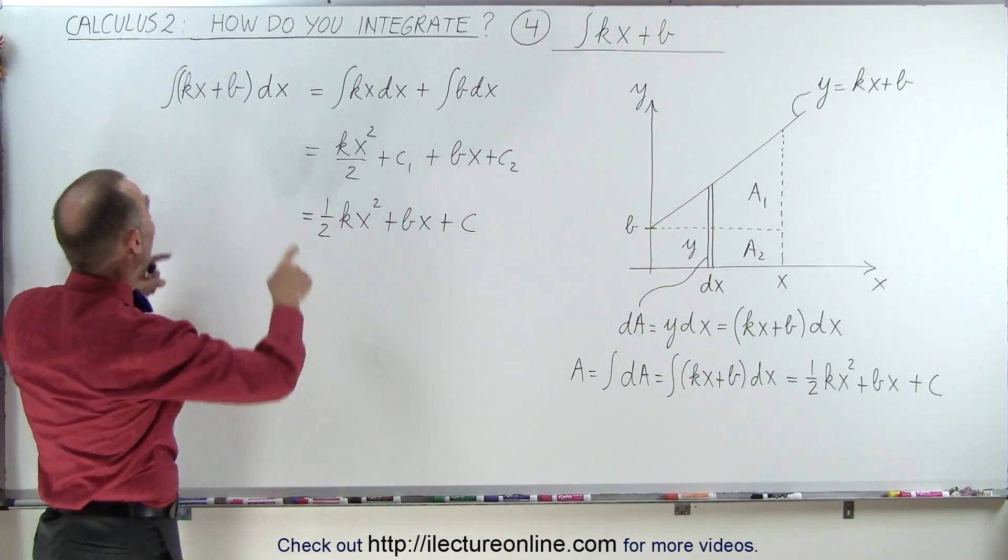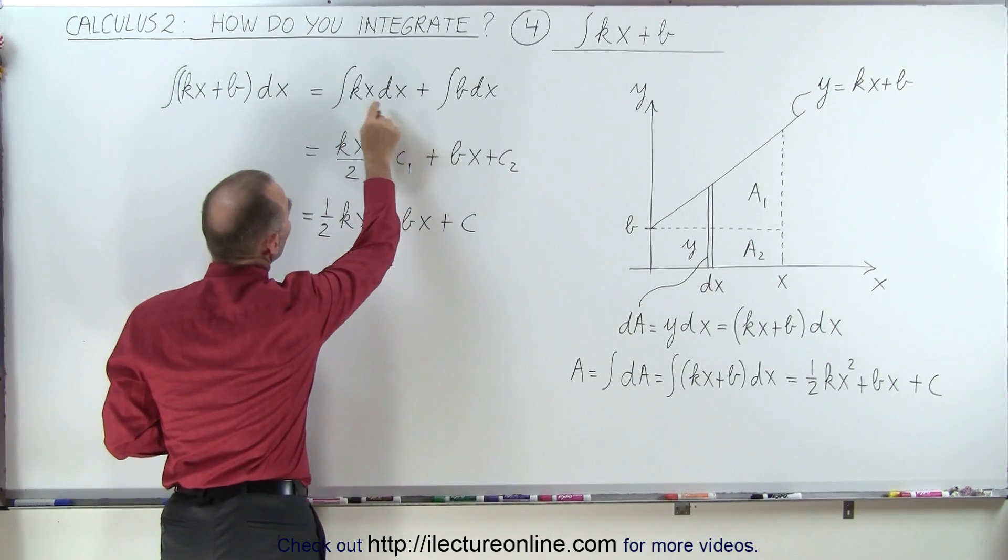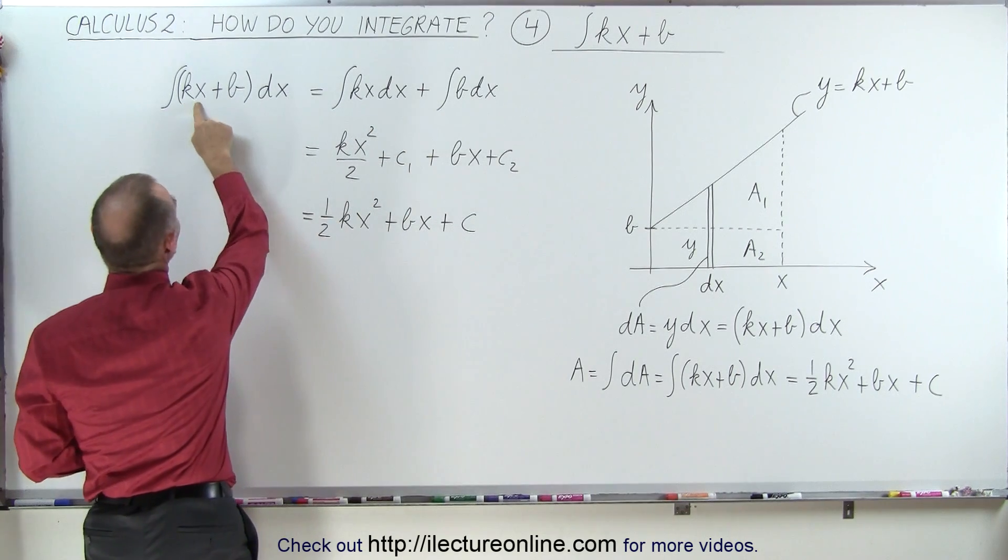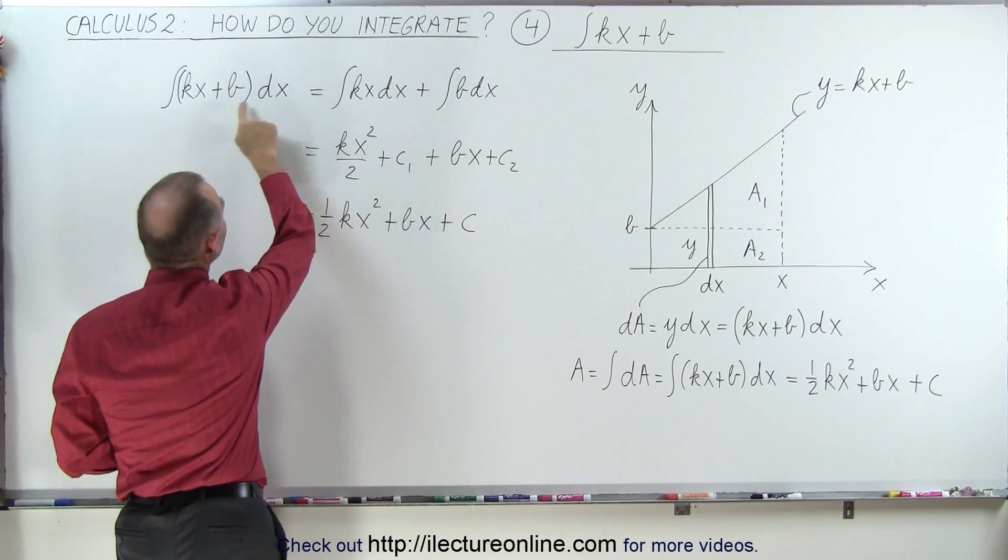Whenever we have multiple terms inside an integral sign, we can actually separate that into two separate integrals. We can write it as the integral of kx times dx plus the integral of b times dx, and then we integrate them separately.